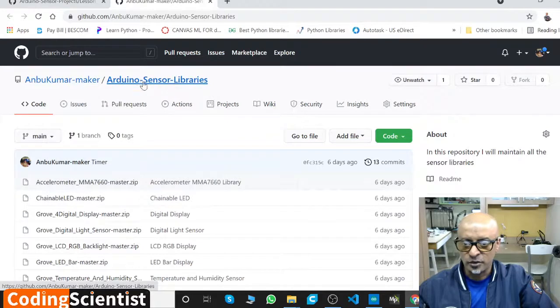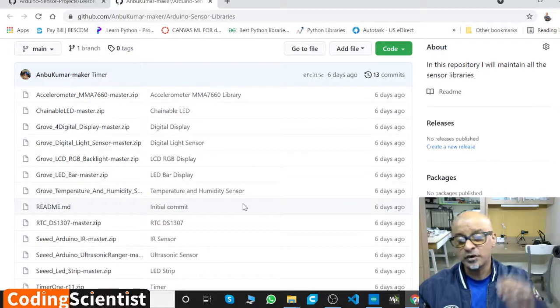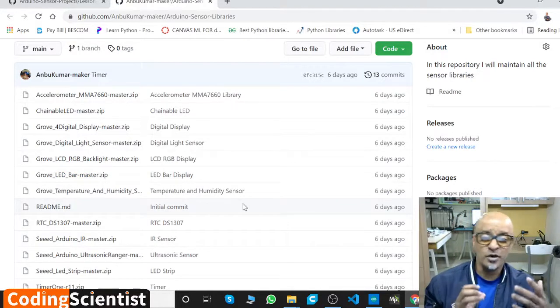If you go to the other section, Arduino Sensor Libraries within my GitHub account, you can go to this particular section and you can find that library, Grove LED Bar Master zip.